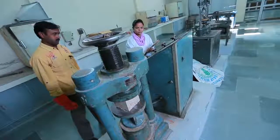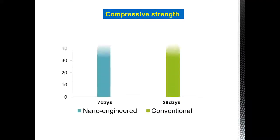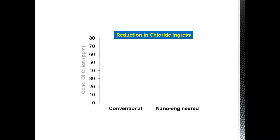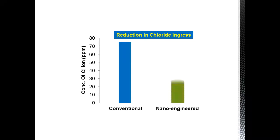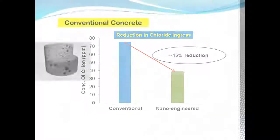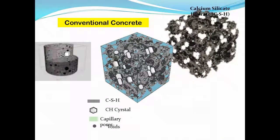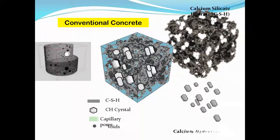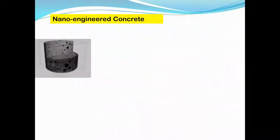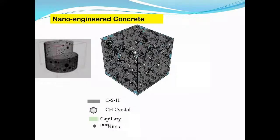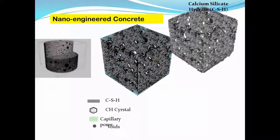Compressive strength results of mortar samples show that nano-engineered mortar at 7 days is more than the 28-day compressive strength of control samples. A 40 to 45% reduction in chloride diffusion was also observed, and calcium hydroxide content is reduced by 50 to 60%. More hydration products are formed, the degree of hydration is 71% improved at early ages, and gel porosity is increased by 55%. All these factors indicate that a greater amount of calcium silicate hydrate is forming.